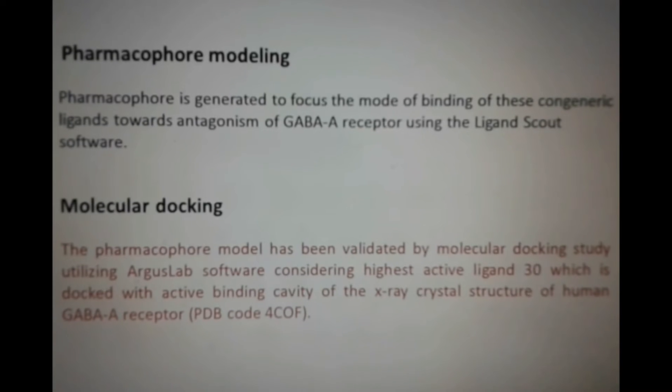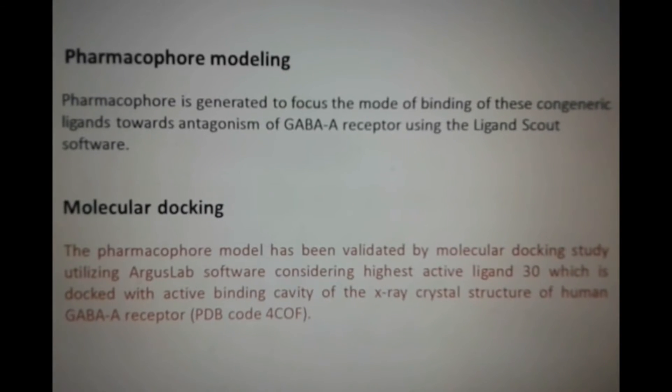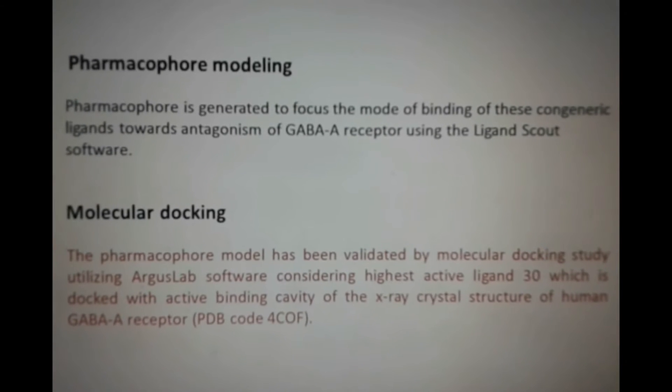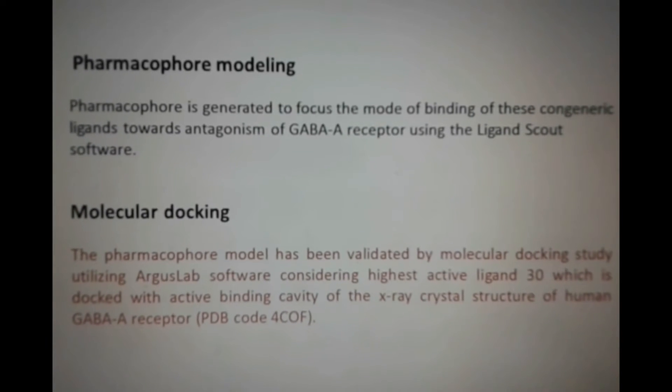The reduced descriptor dataset is considered as the independent variable, whereas the binding affinity data were considered as the dependent variable, for development of the QSAR model utilizing multiple linear regression methods. A pharmacophore was generated to elucidate the mode of binding of these congeneric ligands towards GABA-A receptor antagonism utilizing LigandScout software.